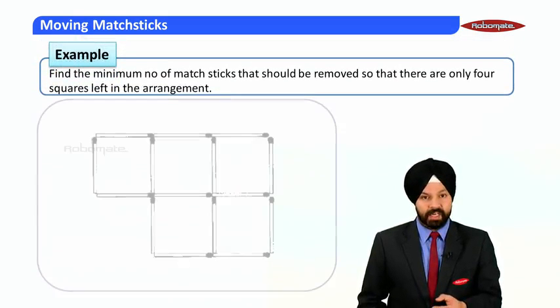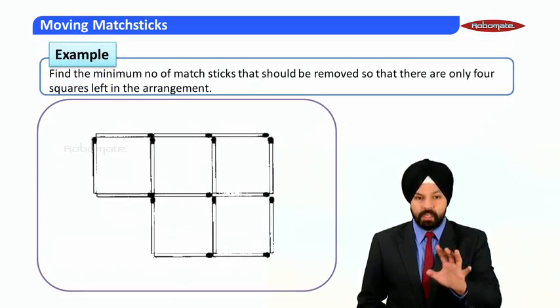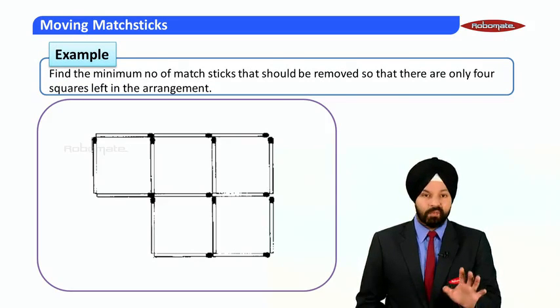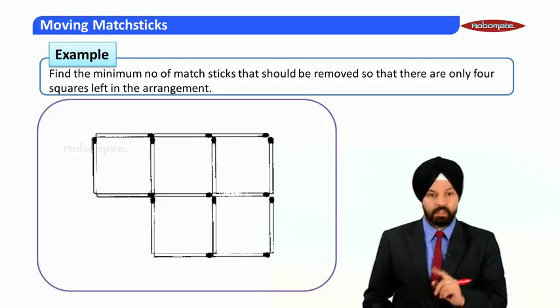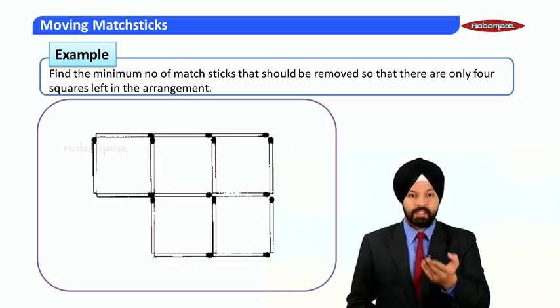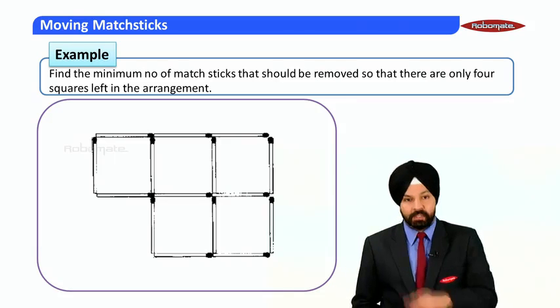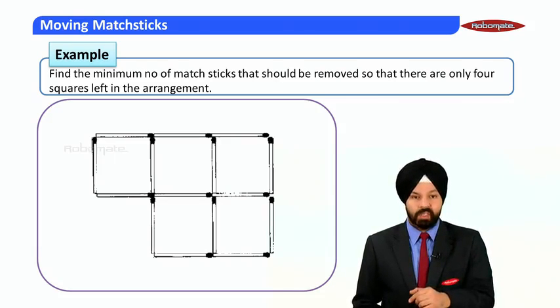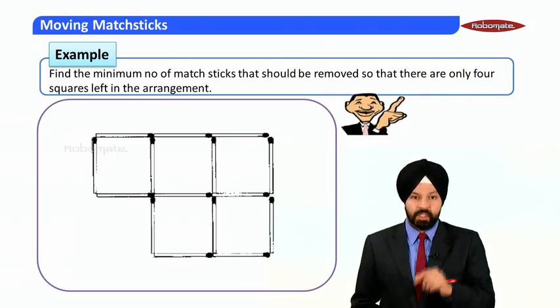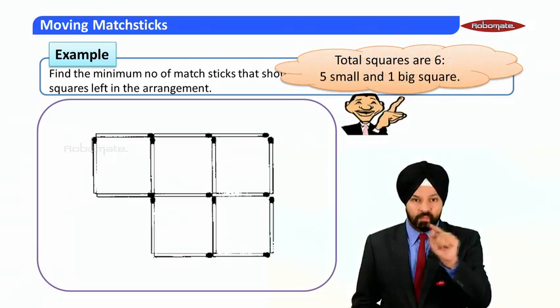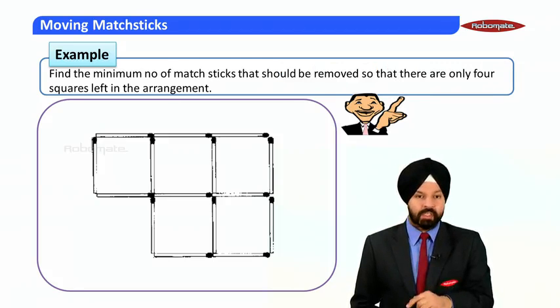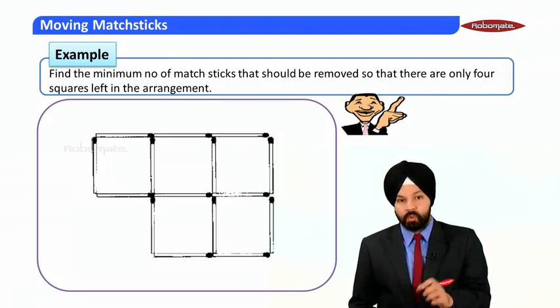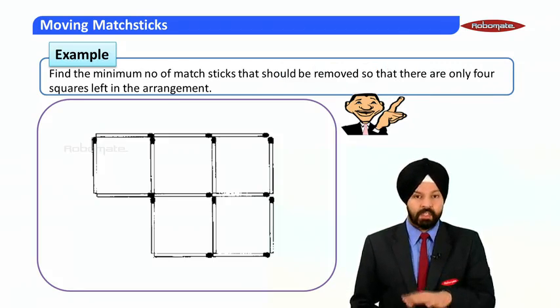The next concept says that we have to pick minimum number of matchsticks so that only four squares are left in the given diagram. So the first thing is that we need to know that how many squares are there in this beautiful diagram created through matchsticks. So if I count, I can see that there are six squares: five are smaller squares, one, two, three, four, five, and then the bigger one. So in all there are six squares which you can see, and the task is to pick minimum number of matchsticks so as to form four squares, means only four squares should remain in this particular diagram.